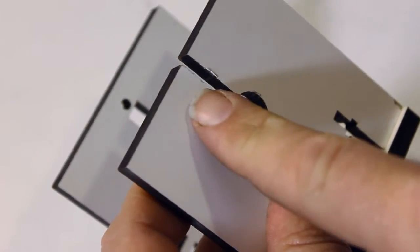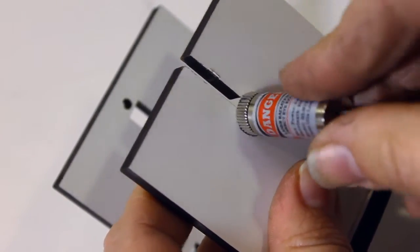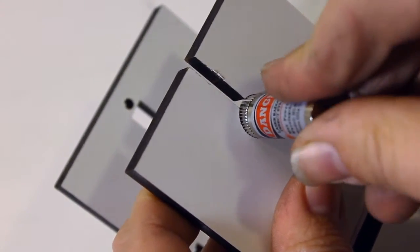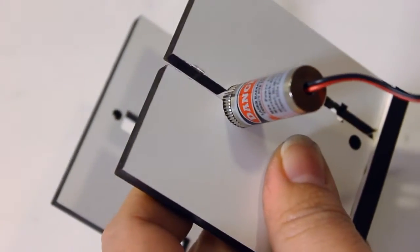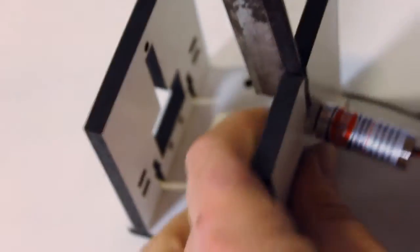On the laser mount, there's a slot here. This makes it possible to spread it apart just a little bit so that it can grip the laser. You're going to want to get something like a flathead screwdriver, or I have a chisel here.